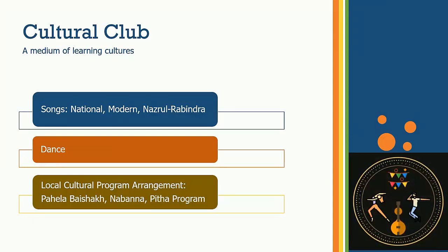The first is the cultural club. A cultural club is a medium for learning cultures and their practices. Institutionally, a cultural club can arrange practice sessions on songs — like national songs, modern songs, Rabindra songs, and Nazrul songs — and also dance sessions. The cultural club can arrange local cultural programs like Pahela Baishakh, Nobanno, and Pitha programs. Here students will learn how to arrange a program where others will participate, developing their program arrangement and operational skills.